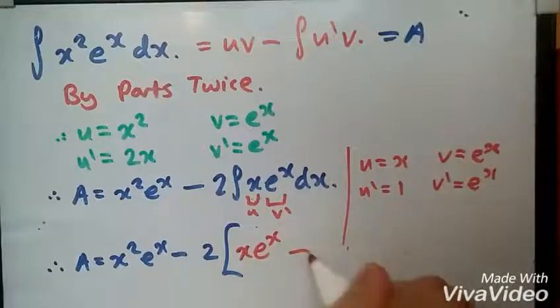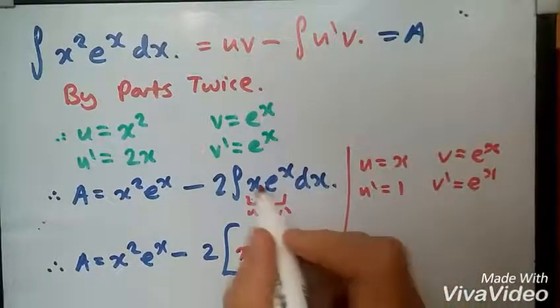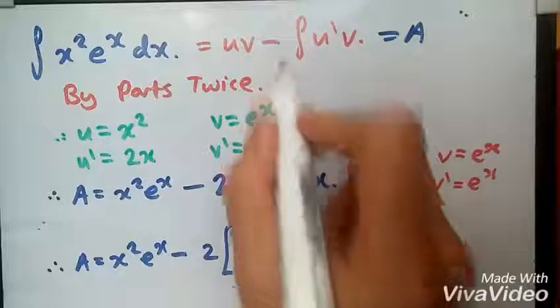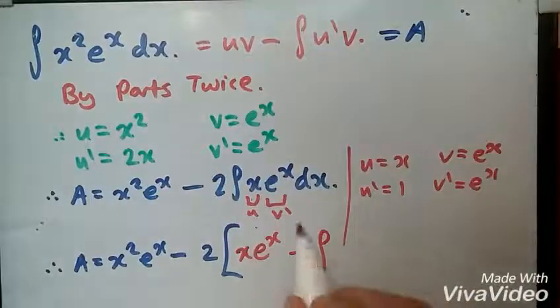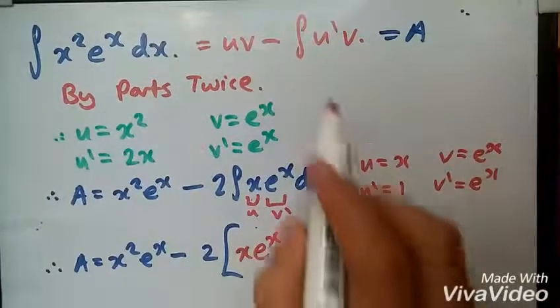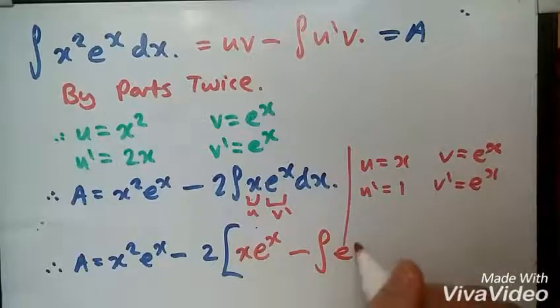x e^x minus the integral, this is the integration by parts using this part inside the bracket. u prime times v will be e^x, and keep the dx here.